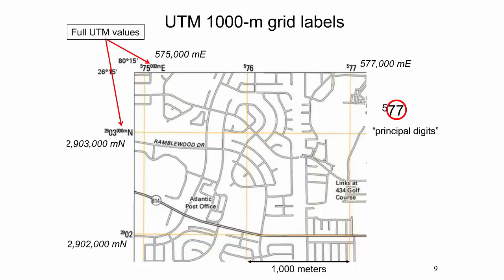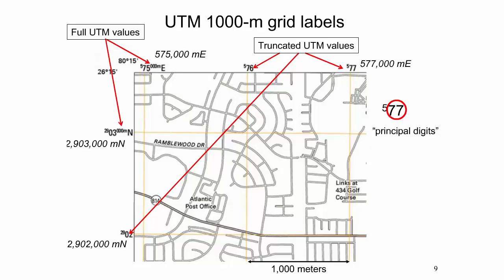The 1,000 meter grid is aligned with the central meridian of the UTM zone and shown in orange. Full UTM easting and northing values are provided for the first grid lines in from the northwest and southeast corners of the projection. In the Fort Lauderdale North Quadrangle example, the westernmost north-south grid line has an easting value of 575,000 meters and the northernmost east-west grid line has a northing value of 2,903,000 meters. Truncated UTM values are shown for other grid lines, where the 10,000 and 1,000 meter digits, known as the principal digits, are printed in large font while preceding digits appear in superscript.